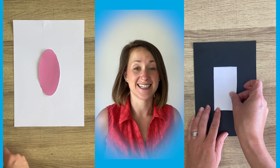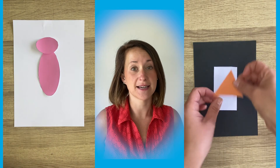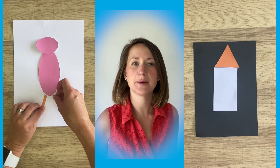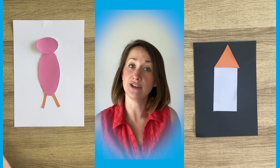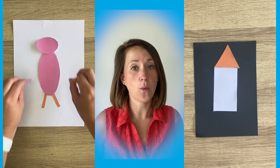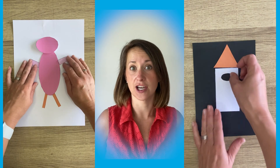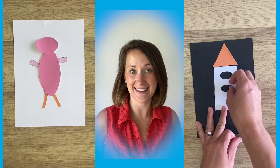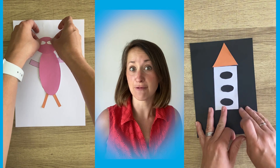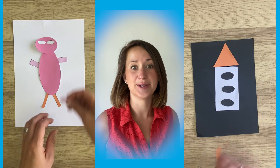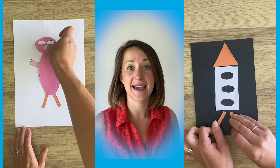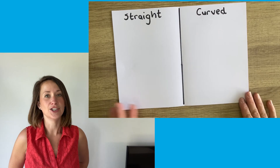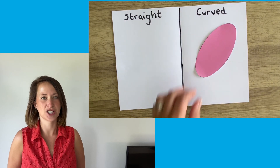Using this activity, you can of course cut the shapes out and stick them down, but if you get children just to place the shapes down, you can use the shapes again. Why not create a picture using their own imagination? It could be anything — a rocket, a little person, or a shape person.